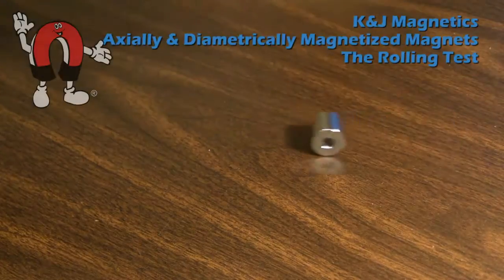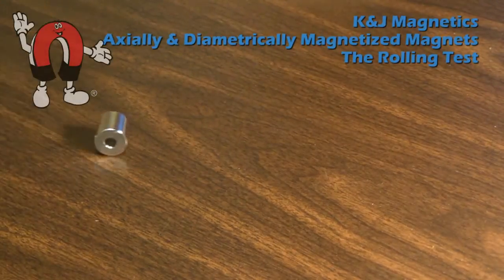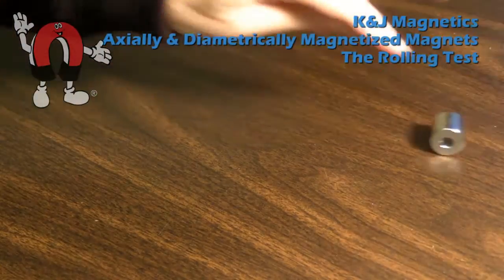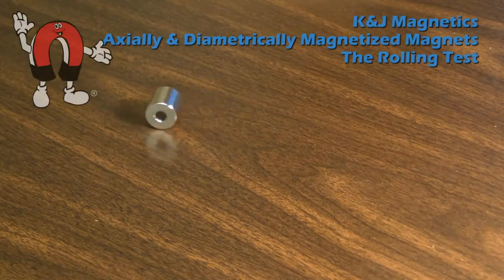For a final example, the big RC4CDIA diametrically magnetized ring magnet, which shows a pretty obvious wobble.